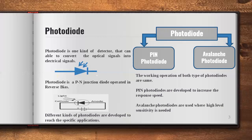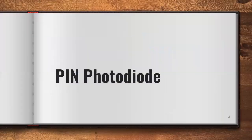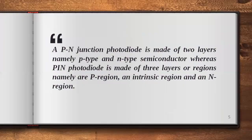The working operation of both types — PIN and avalanche photodiode — are the same and both are operated in reverse bias. Let's discuss the complete details of both types one by one. First, PIN photodiode.